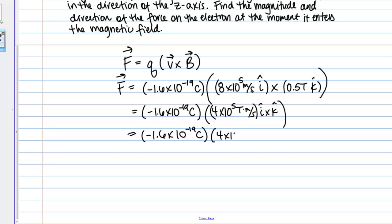So 4 times 10 to the fifth teslas meters per second, and this is in the negative J hat direction. Now I've got some constants to work out here. Let me calculate negative 1.6 times 10 to the negative 19th times 4 times 10 to the fifth. That should give us 6.4 times 10 to the negative 14th. My units are tesla coulomb meters per second.